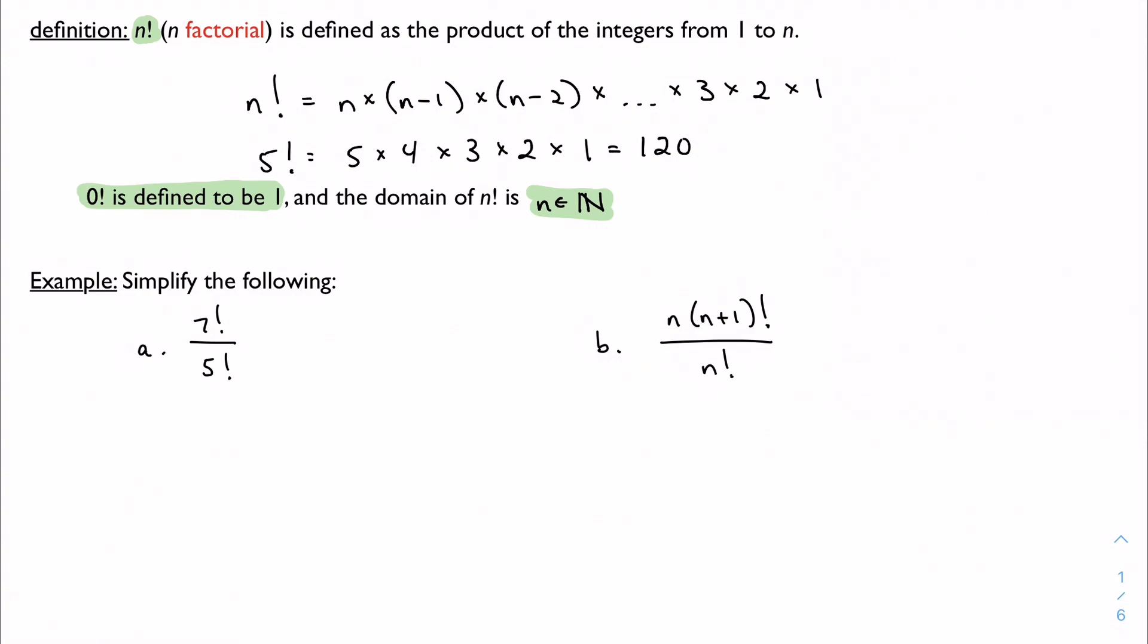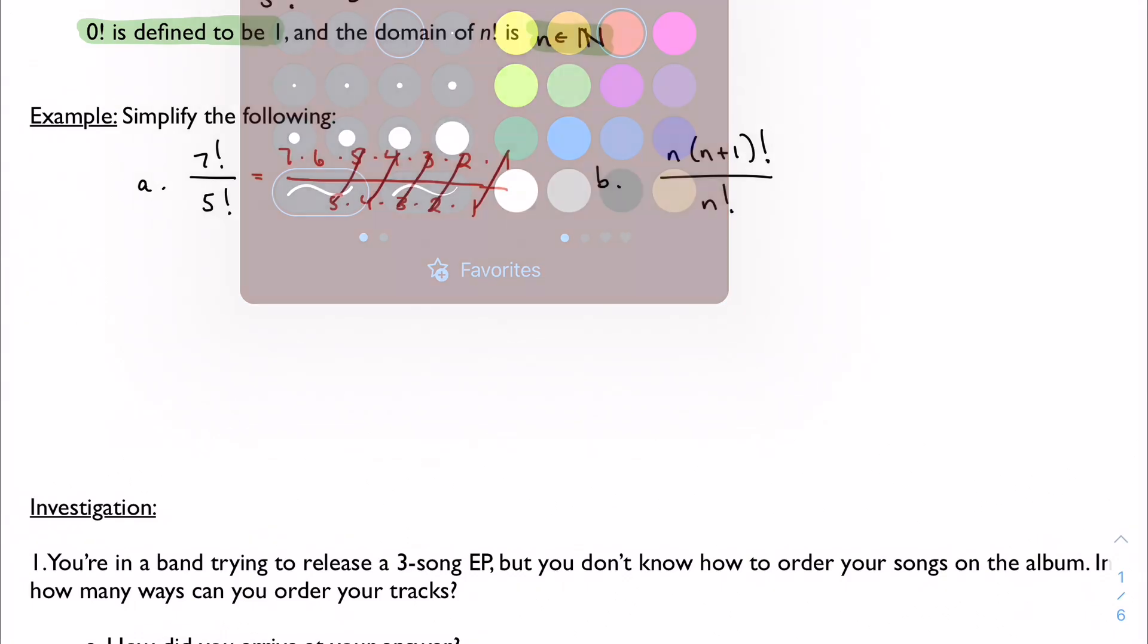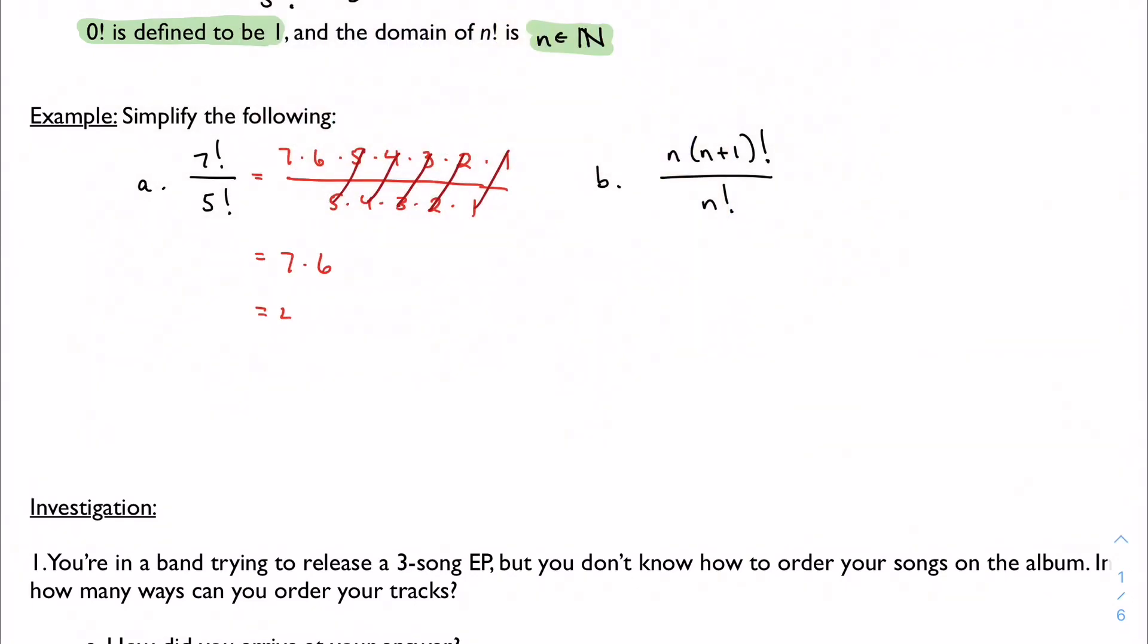Let's work with this factorial notation a little bit more and practice simplifying. So 7 factorial divided by 5 factorial. Let's start by expanding this. 7 factorial is 7 times 6 times 5 all the way down to 1. And 5 factorial is 5, 4 all the way down to 1. I can cancel some things out here. I've got 5, 4, 3, 2, and 1 in common, and I'm just left with 7 times 6, and I get 42.